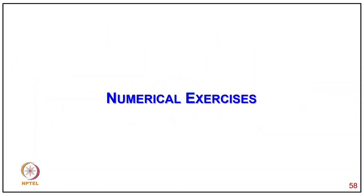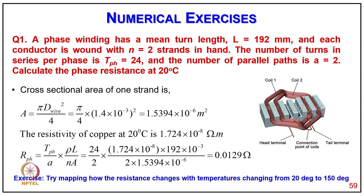Coming to numerical exercise, question 1: a phase winding has mean turn length L = 192 mm, each conductor wound with n = 2 strands in hand, number of turns in series per phase TpH = 24, and number of parallel paths A = 2. Calculate the phase resistance at 20°C. The cross-sectional area of one strand is A = πDwire²/4 = 1.5394×10⁻⁶ m². Resistivity of copper at 20°C is 1.724×10⁻⁸ Ω·m. Resistance R = (TpH/A)·(ρL/nA) = 0.0129 Ω.